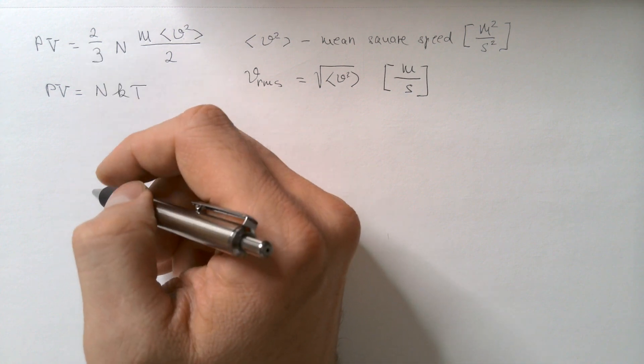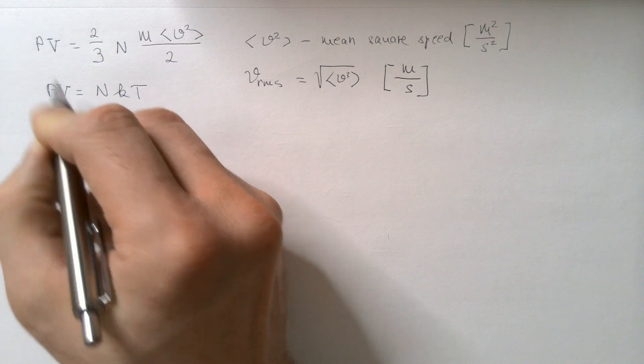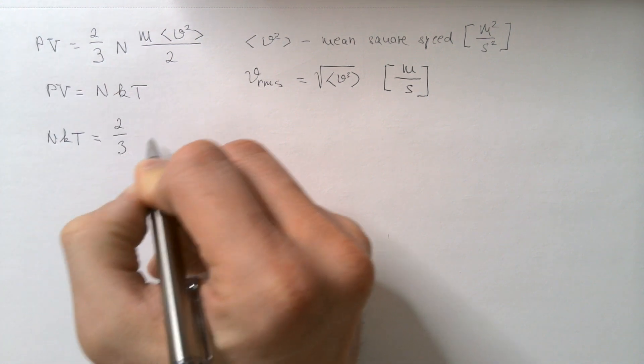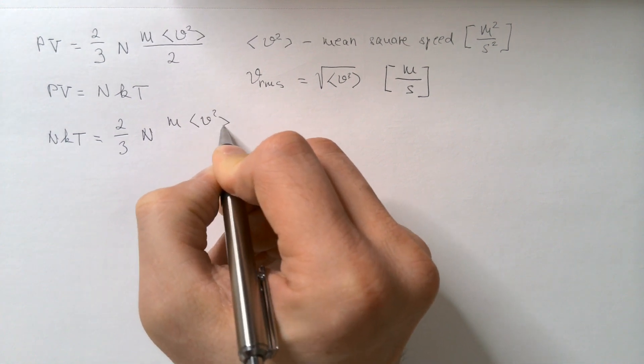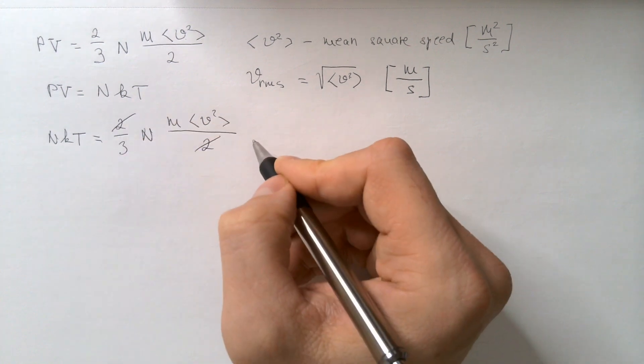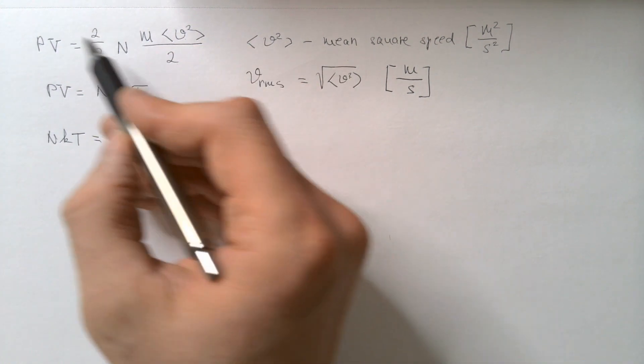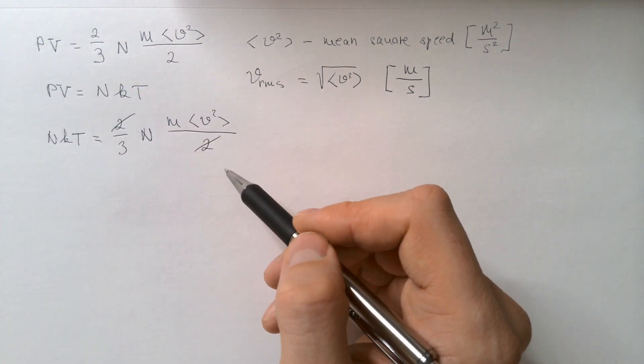Combining these two equations, I get that N K T, instead of this PV I use that, is equal to 2 over 3 N M V squared over 2, 2 and 2 cancels. Of course, I could cancel this immediately, but I wanted to have a starting point that is the same as in my video on the pressure of a gas.